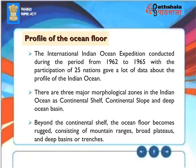Profile of the Ocean Floor. The International Indian Ocean Expedition conducted from 1962 to 1965, with the participation of 25 nations, yielded extensive data about the ocean floor profile. There are three major morphological zones in the Indian Ocean: the continental shelf, the continental slope, and the deep ocean basin. Beyond the continental shelf, the ocean floor becomes rugged, consisting of mountain ranges, broad plateaus, and deep basins or trenches.